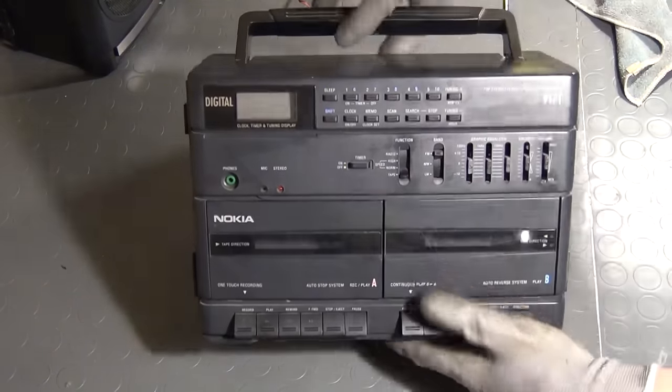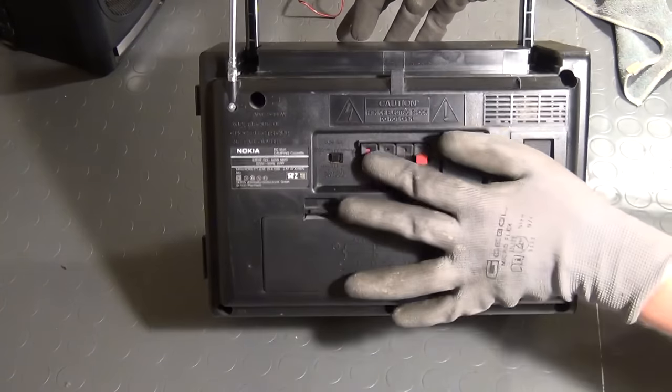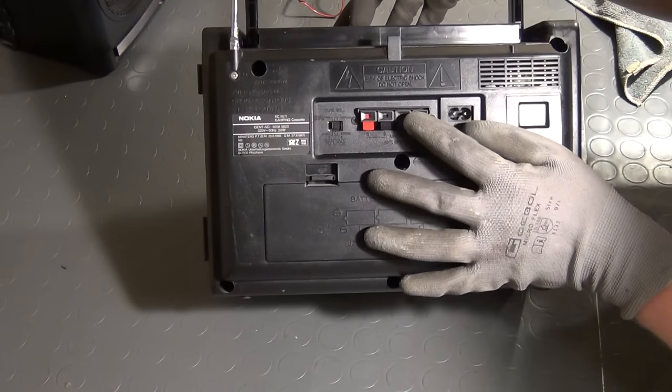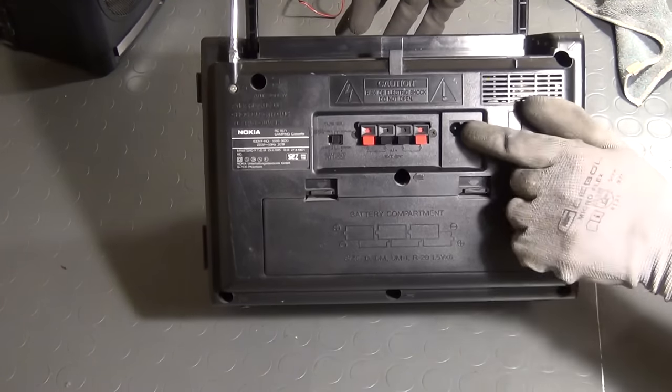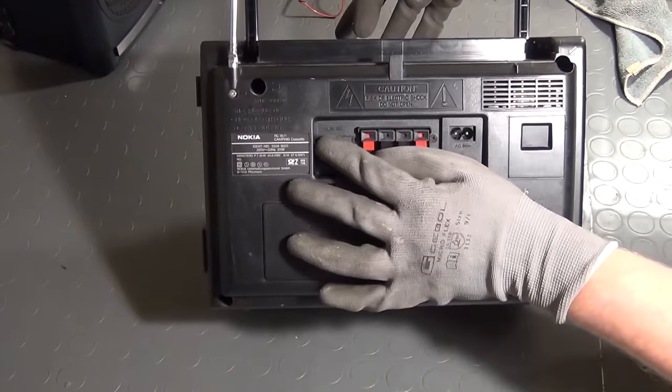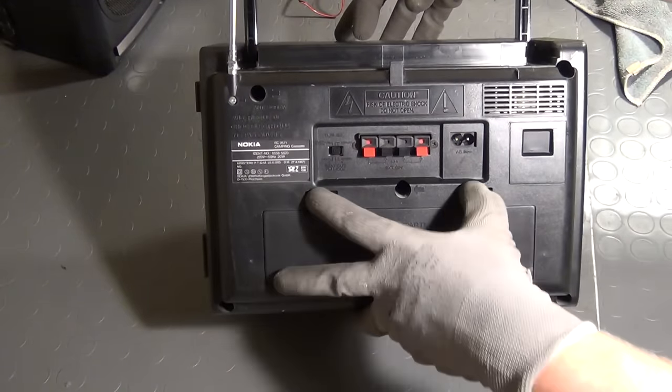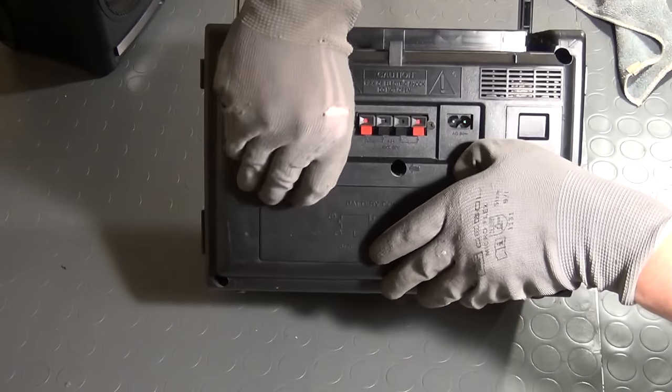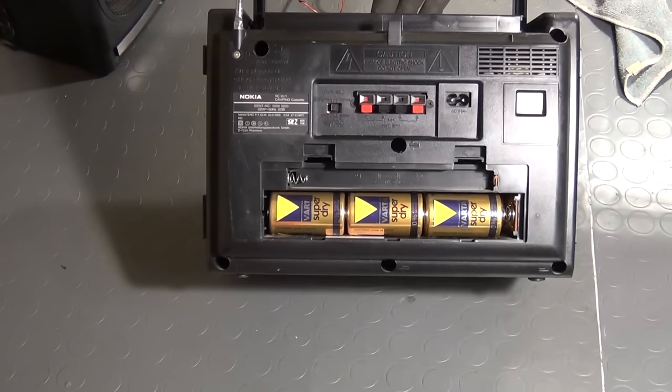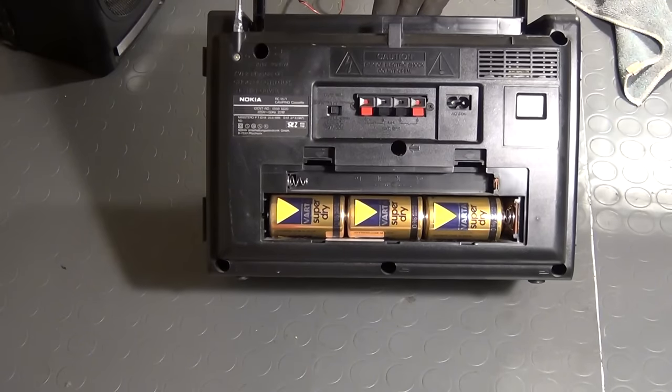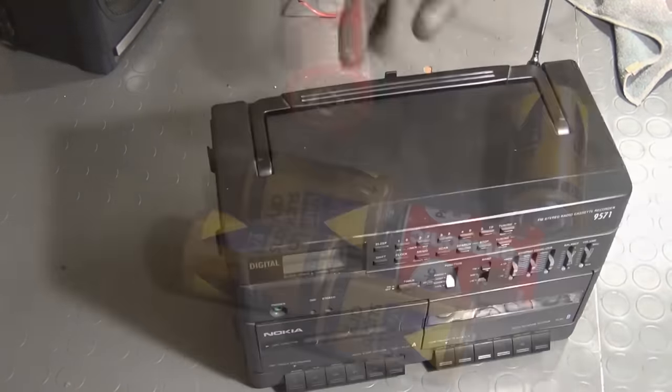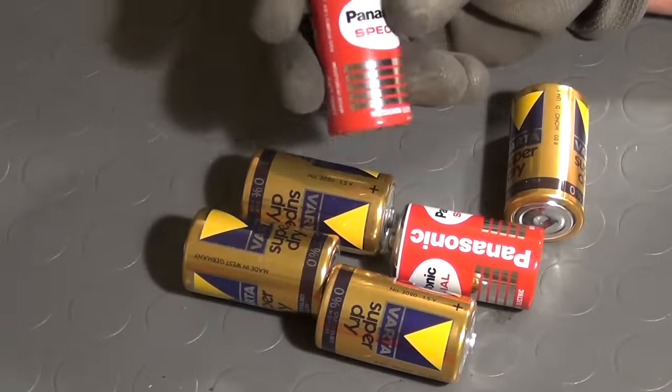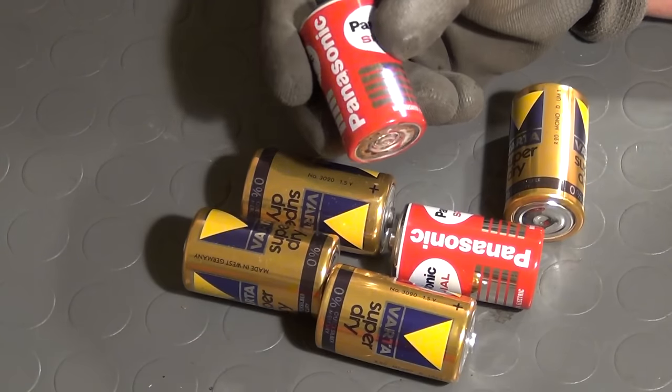The second question is how do you get your hands on something like this? I can only speak for my country, and here in Germany it's extremely easy. You go on eBay Kleinanzeigen, which is eBay small ads, and they have a special category called Zu verschenken, which means for free. If you browse through that regularly, I assure you that you will find something either for free or for a couple of euros.